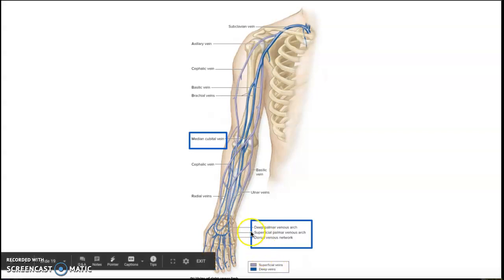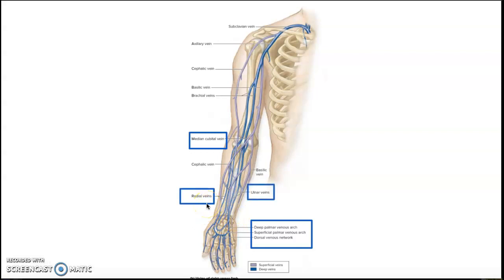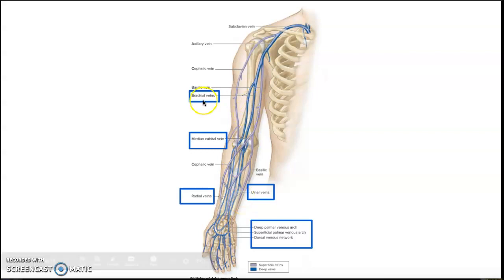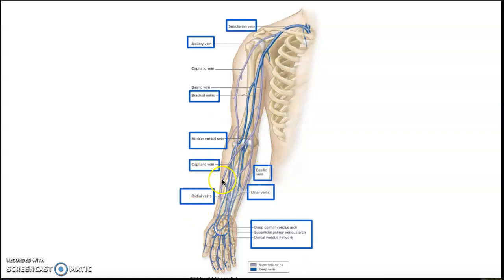The deep palmar venous arch and superficial palmar venous arch drain into the radial and ulnar veins — these are the deep veins — and they drain into the brachial veins, which are also deep, ultimately draining into the axillary vein. This is different from the superficial veins like the basilic and cephalic veins, which also eventually drain into the axillary vein and ultimately to the subclavian vein.